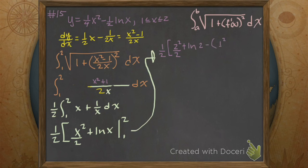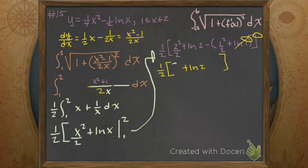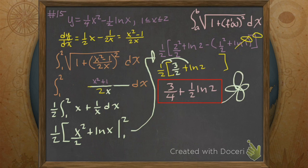Upper is 2, lower is 1. It's all fun in reducing — bam, nothing! Then clean that up: 2 minus a half is 3 halves. I like that. I'm going to distribute it: I get my 3/4 plus my 1/2 times the natural log of 2. And I'm done!